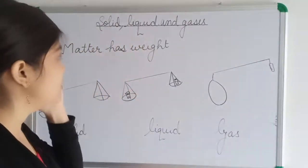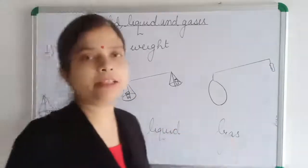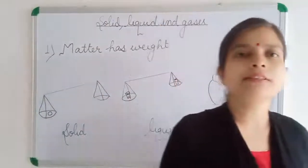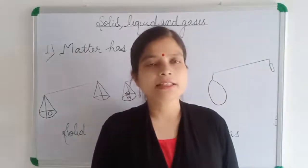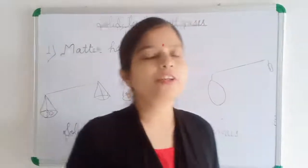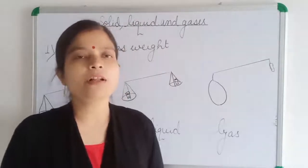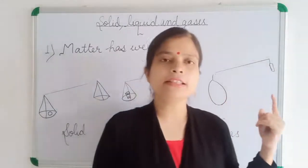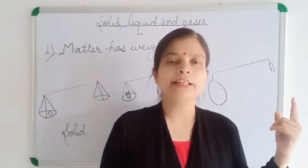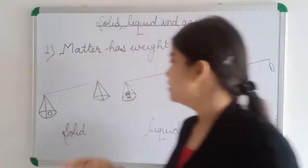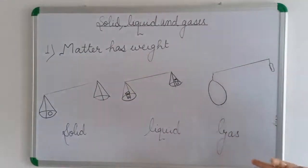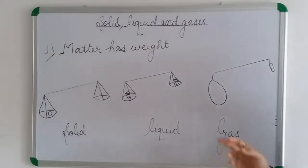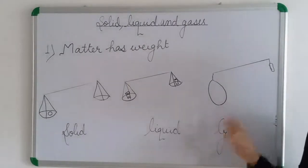So children, solids, liquids, and gases are all matter. The definition of matter is: anything that has weight and occupies space is called matter. Since solids, liquids, and gases are all matter, they all have weight. All matter, whether it is solid, liquid, or gas, has weight.